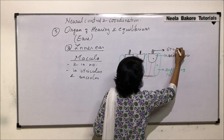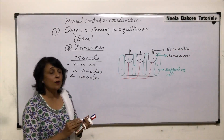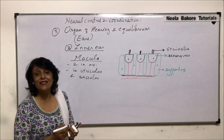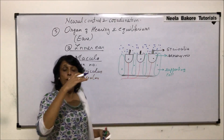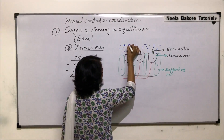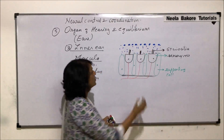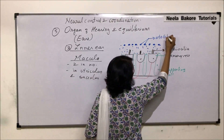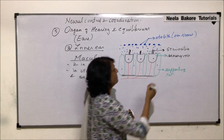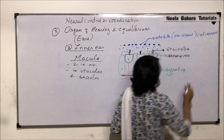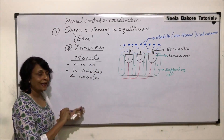The sensory cell has stereocilia — sensory, non-motile cilia. The upper end is covered with a thick gelatinous layer known as the gelatinous capsule. At the top of this gelatinous capsule are floating calcareous particles known as otoliths, or ear stones. These otoliths are calcareous, meaning they are made up of calcium compounds.